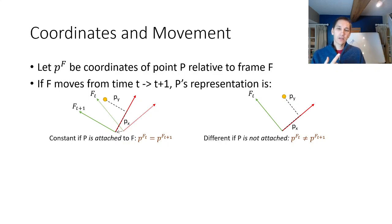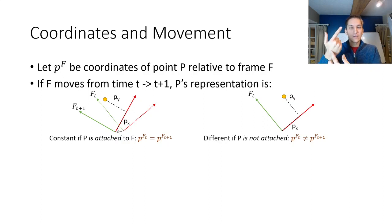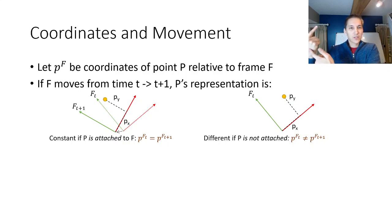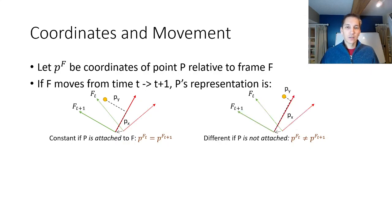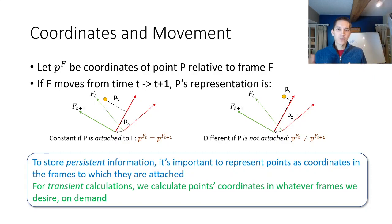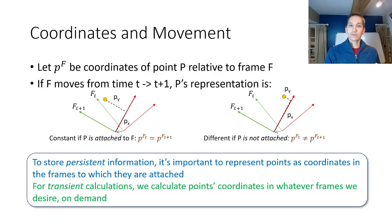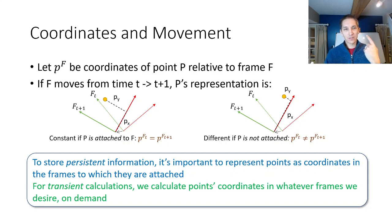On the other hand, consider my eye: if I move my palm, my eye doesn't change location. So if my eye is not attached to the palm frame, its coordinates with respect to the palm are actually changing. If we want to store some sort of persistent information — like something we've calibrated — it's important to represent points as attached to the frames with which they move. For transient calculations, like figuring out where my eye is relative to my hand at a given moment, you can calculate those on the fly as long as you know the relative transforms between the different reference frames.